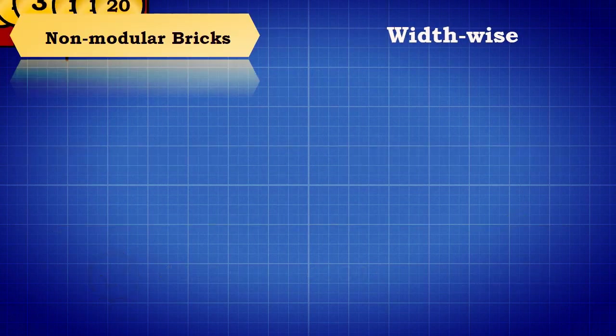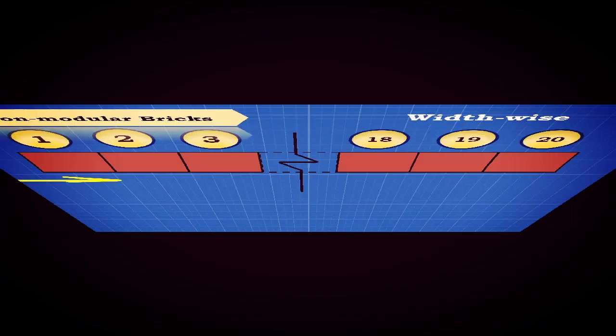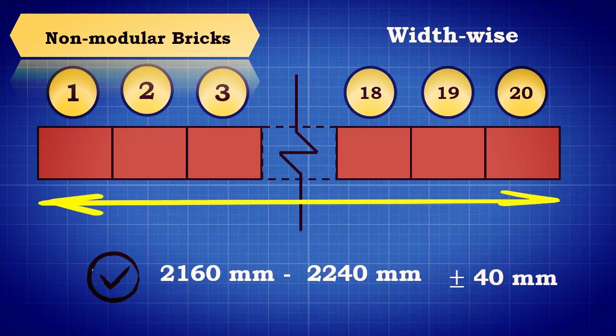When placed widthwise, it should be 2400 mm. The tolerance limit of acceptance is between 2360 mm and 2440 mm, that is plus or minus 40 mm.